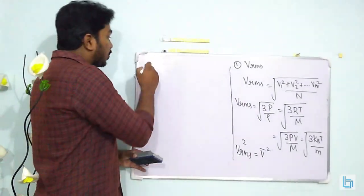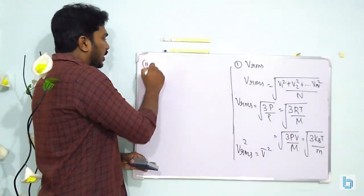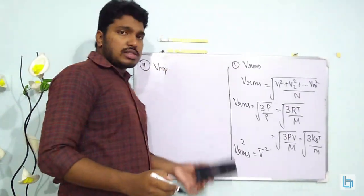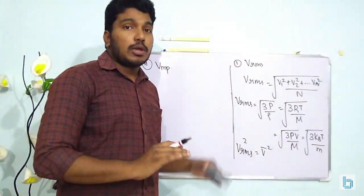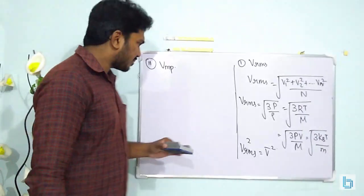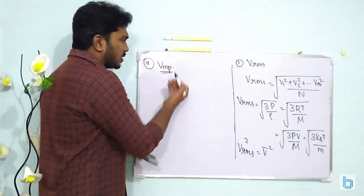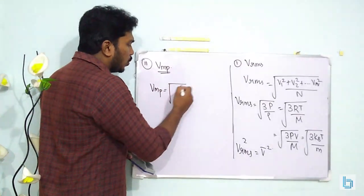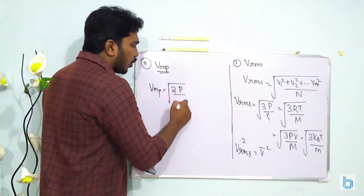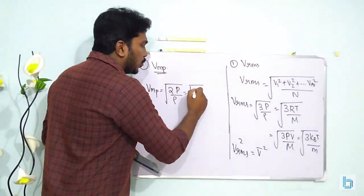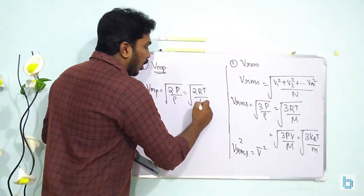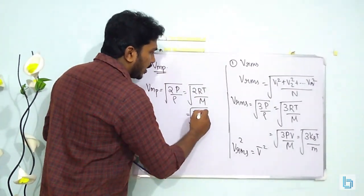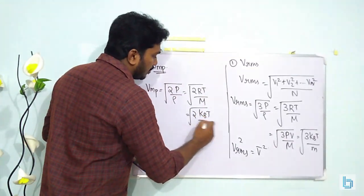The second type is most probable velocity Vmp — the velocity possessed by the largest number of gas molecules. Vmp = √(2P/ρ) = √(2RT/M) = √(2kBT/m). The equations for Vrms and Vmp are similar in form — the only difference is the constant: 3 for Vrms versus 2 for Vmp.